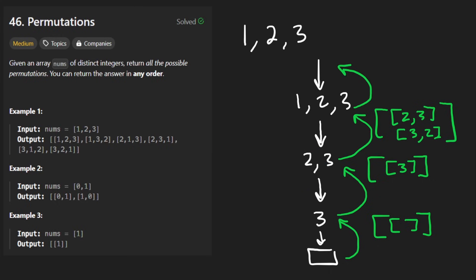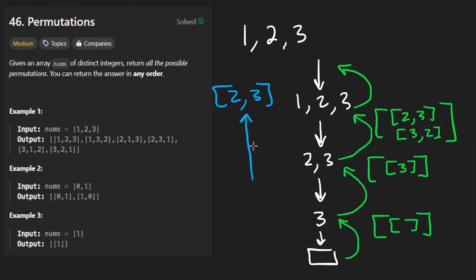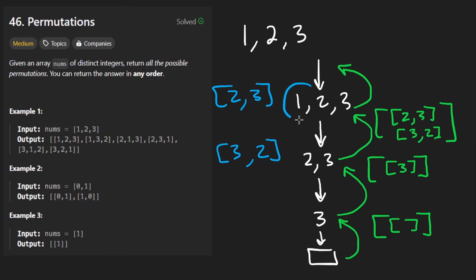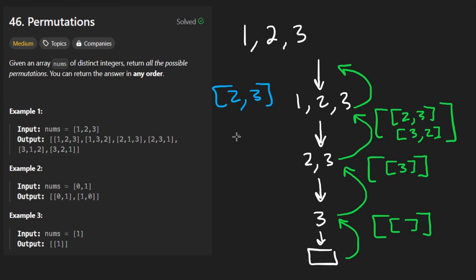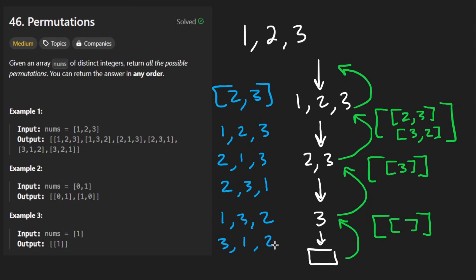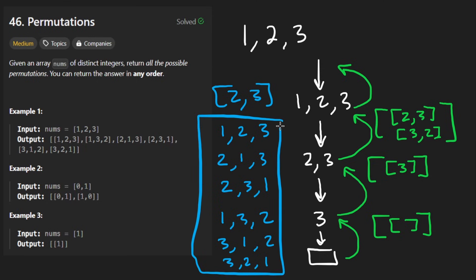From here, we're going to do the same thing. We have these two permutations — 2 and 3 — and what we're going to do is try to put 1 in every position: at the beginning, in the middle, and at the end. We're going to end up with 3 different permutations. We do the same thing with 3, 2 — put 1 at the beginning, in the middle, and at the end — giving us 3 more permutations, which is 6 total. The six permutations are: 1,2,3 — 2,1,3 — 2,3,1 — and from 3,2: 1,3,2 — 3,1,2 — 3,2,1. Now let's code it up.